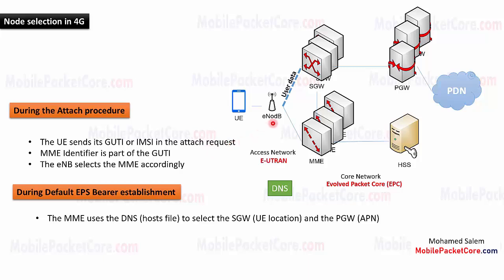So the eNB selects the MME that was serving this UE during the last session in order to serve this UE in this session as well. This is because this MME already has the mobility management context of this UE, which contains the IMSI, UE subscription information, and the authentication vector of this UE, so that the MME will not need to retrieve this data again from the HSS. This will save time and reduce signaling sent to and from the HSS.